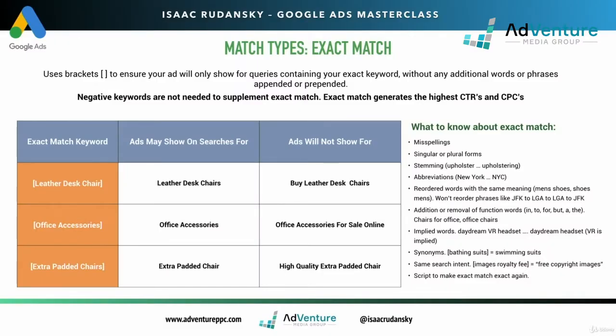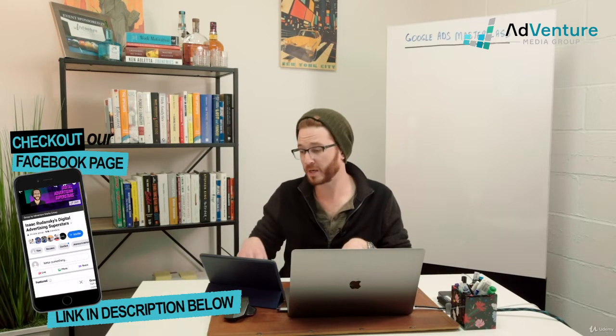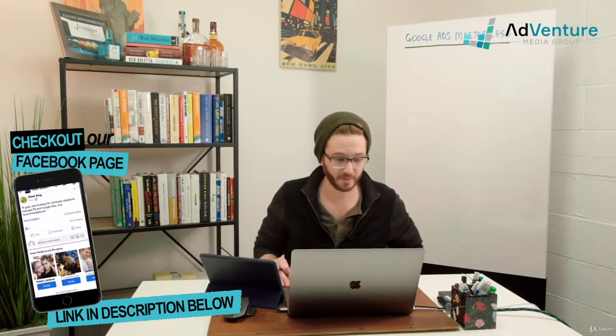Exact match generates the highest click-through rates and also the most expensive CPCs. High click-through rates typically mean a higher quality score, and higher CPCs because exact match keywords are typically your best keywords — the ones most competitors really want to get on top of. For example, 'buy leather office chairs online': anyone selling office chairs online wants that keyword, so they'll bid more aggressively on that exact version.